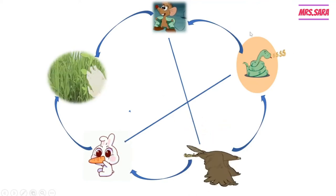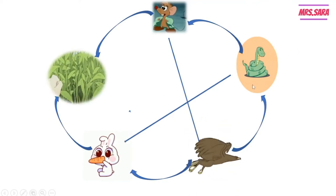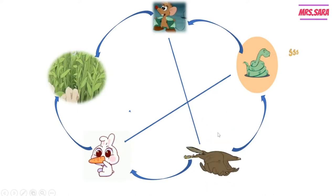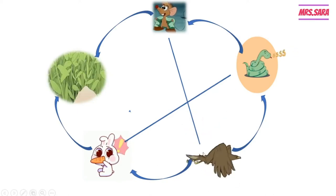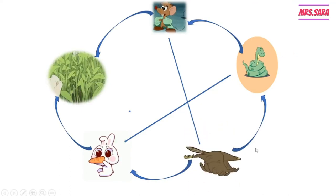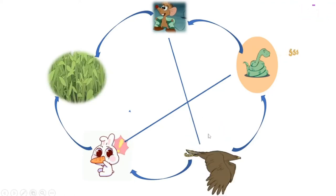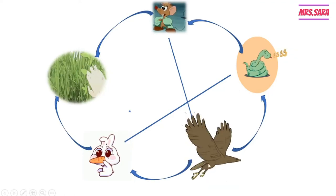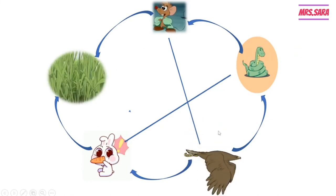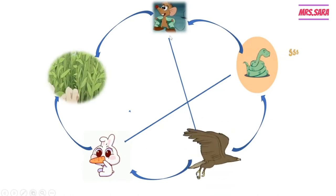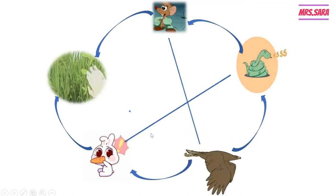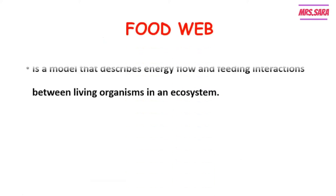The snake can eat the mouse and also the rabbit, so the snake is a secondary consumer. The eagle can eat the mouse and the rabbit, so the eagle is also a second consumer. And the eagle can eat the snake, so the eagle is also a tertiary consumer. As you can see, this is called a food web — it shows many different, or several interconnected, food chains.